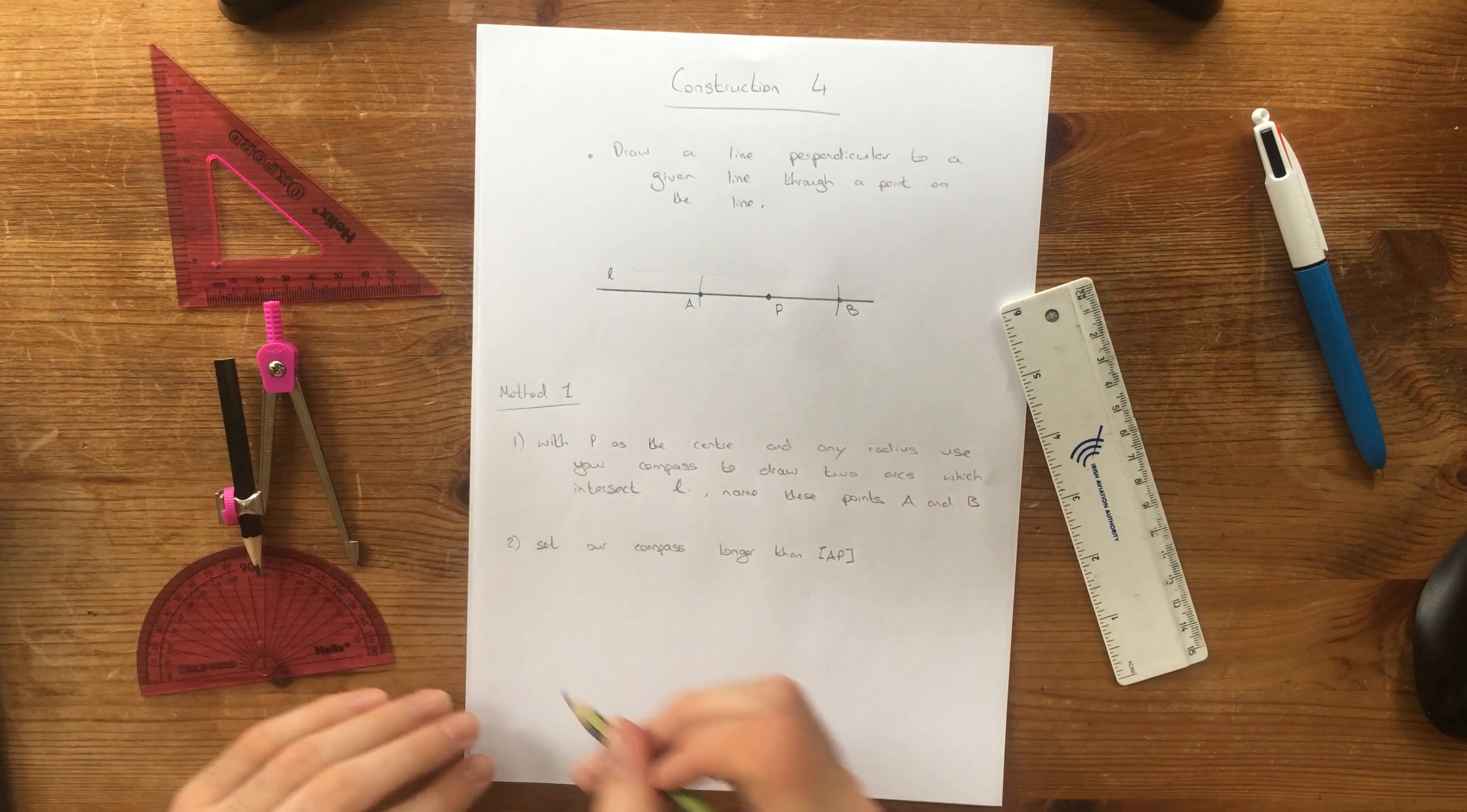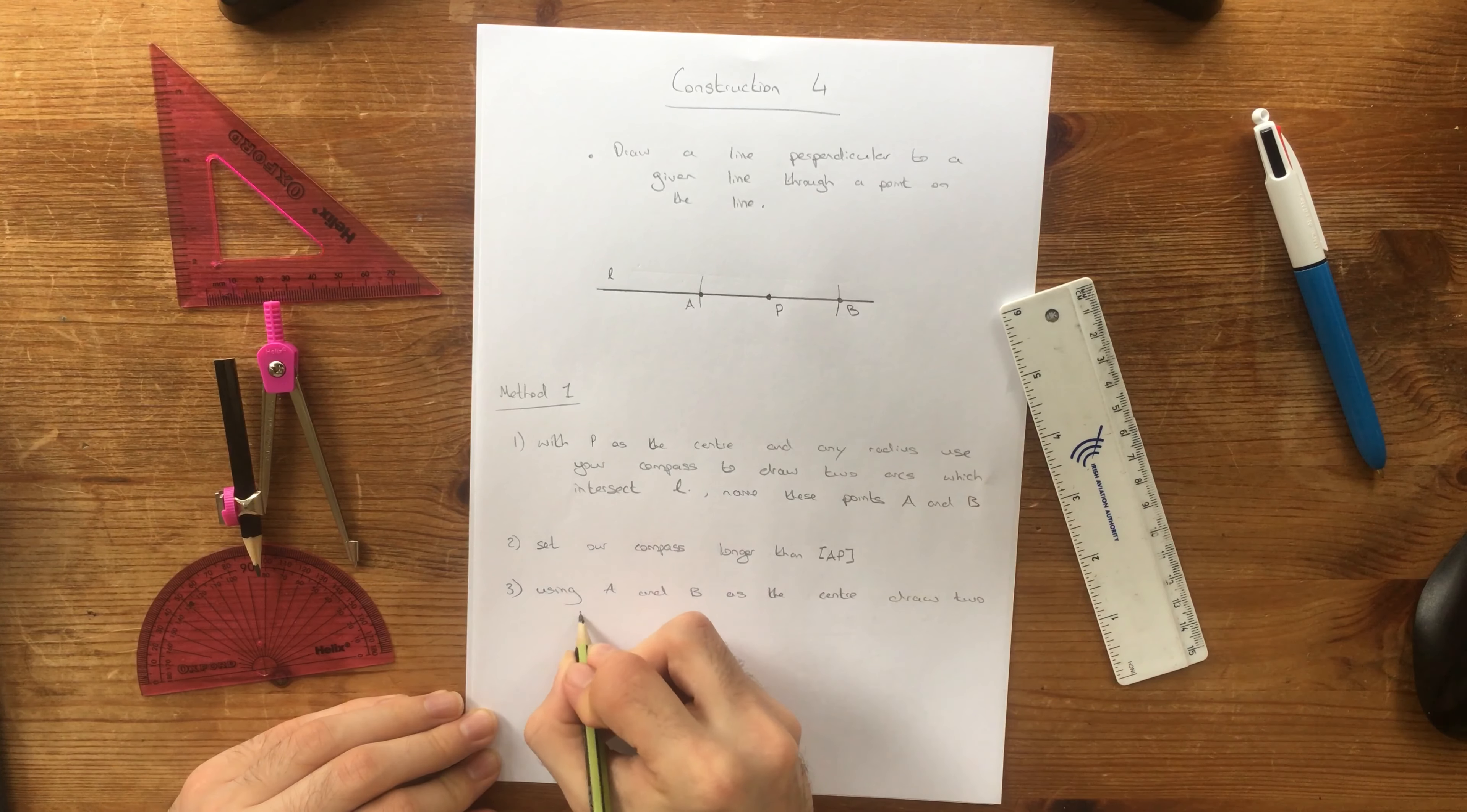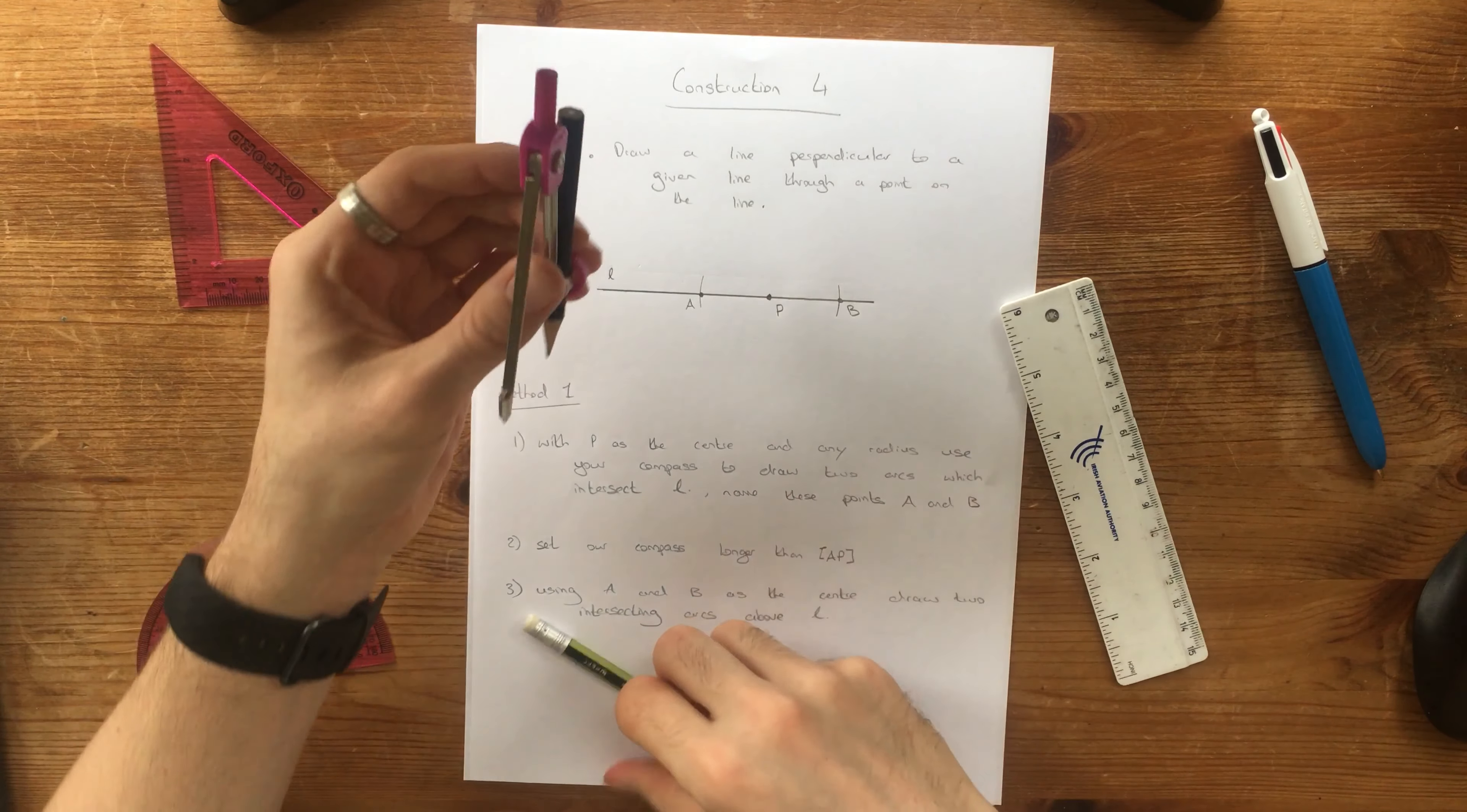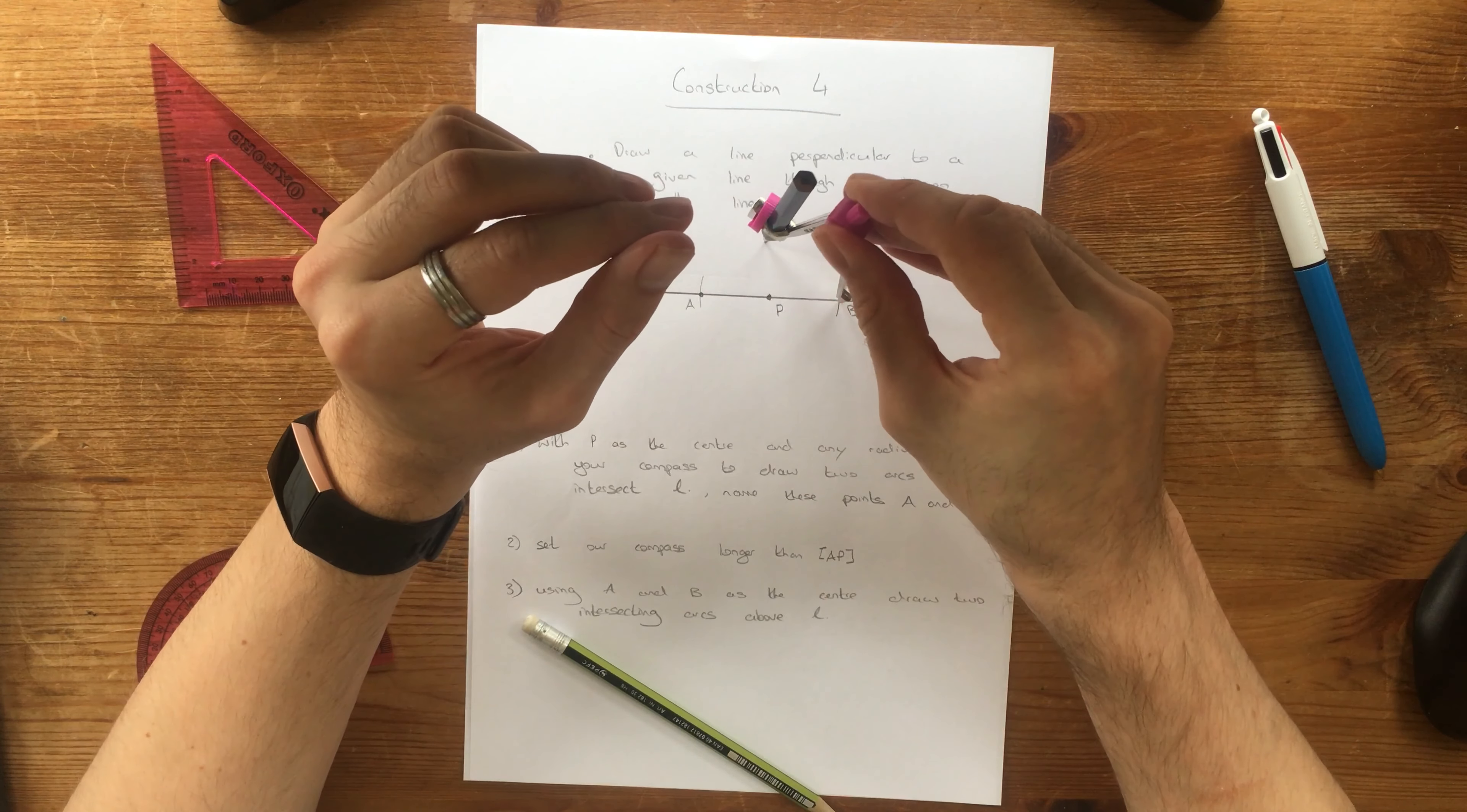And now using A and B as the center, draw two intersecting arcs above L. So using A as our center and that radius of our compass, we're going to draw an arc up here. And then using B as the center, if I get that on it exactly, there we go. We cross it up here.